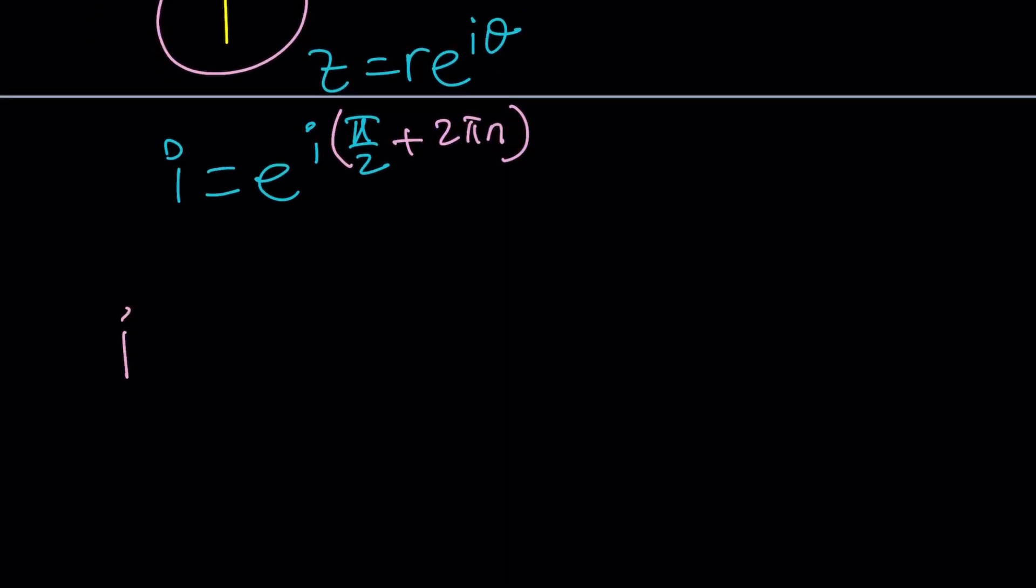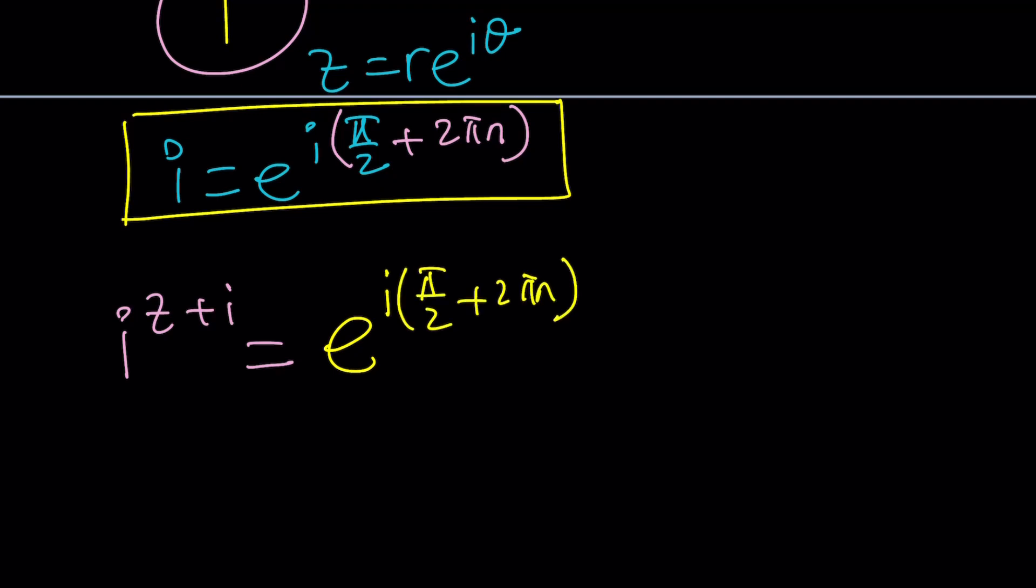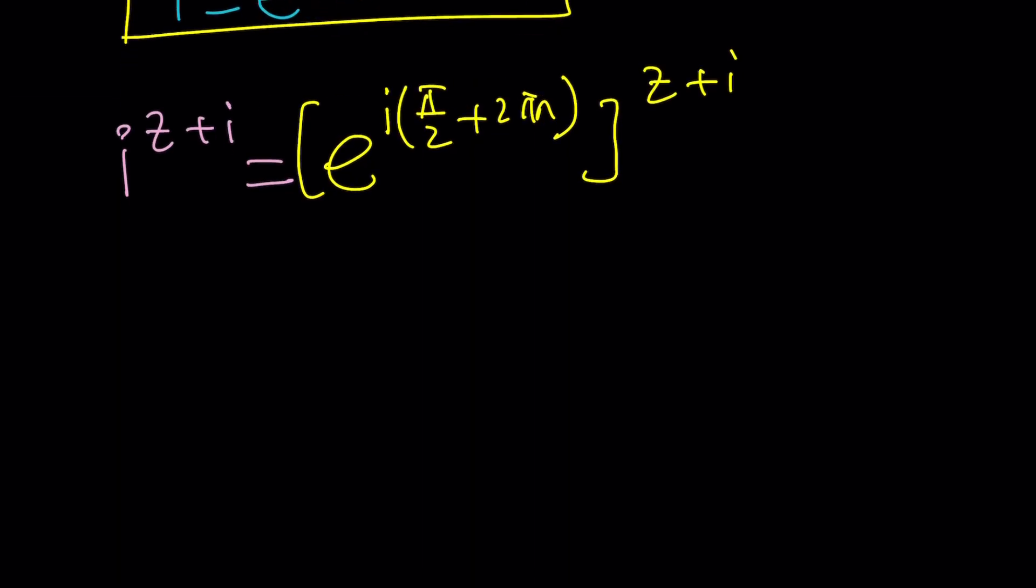Of course I need to plug it in. I'm going to replace i with this. We get e^(i(π/2 + 2πn)) raised to the power z plus i. In this case the exponents are multiplied so we get e^(i(π/2 + 2πn)(z+i)) equals one.